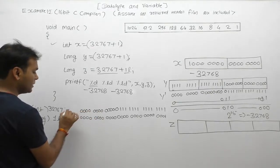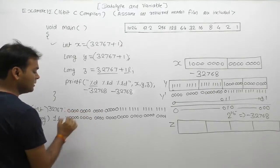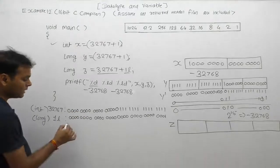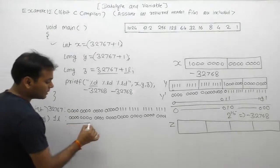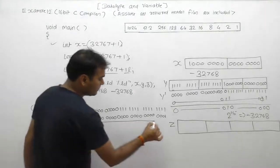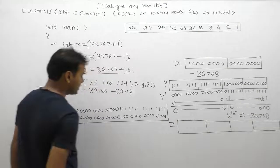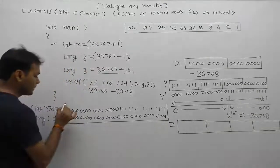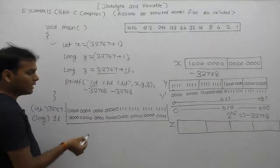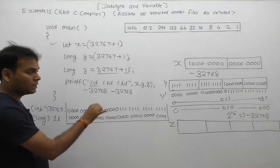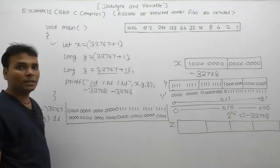Now the addition: in the previous case, addition was 16 bits with 16 bits. But in this case, the addition is 32 bits with 32 bits, so the result is also in 32 bits.